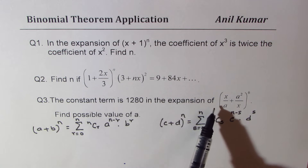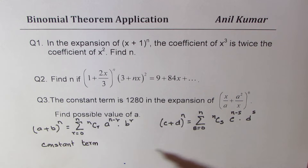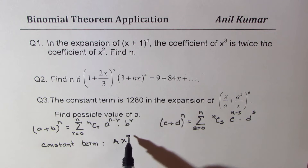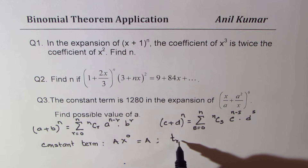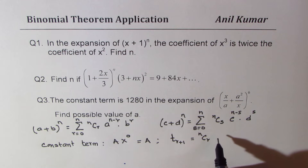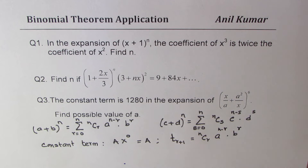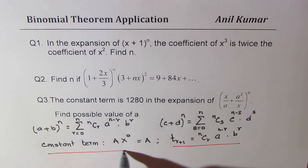In the third case, we are talking about the constant term. For the constant term, we have something — let's say capital A times x to the power of 0. Since x to the power of 0 is 1, this equals A, a constant term. We will also be using the formula for the general term: T(r+1) = nCr × A to the power of n minus r × b to the power of r. So I have summarized the formulas to be used in solving all these questions.